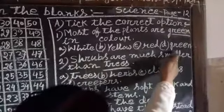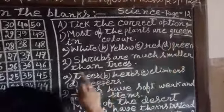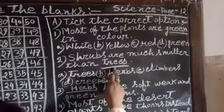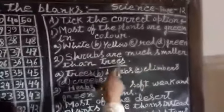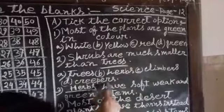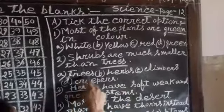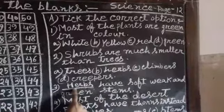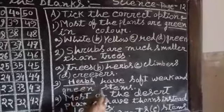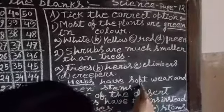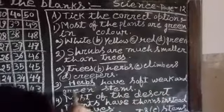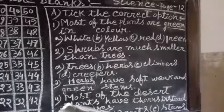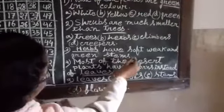Most of the plants are smaller than trees. Trees, shrubs, climbers, and creepers are the four options. These are the options for trees, shrubs, and creepers.